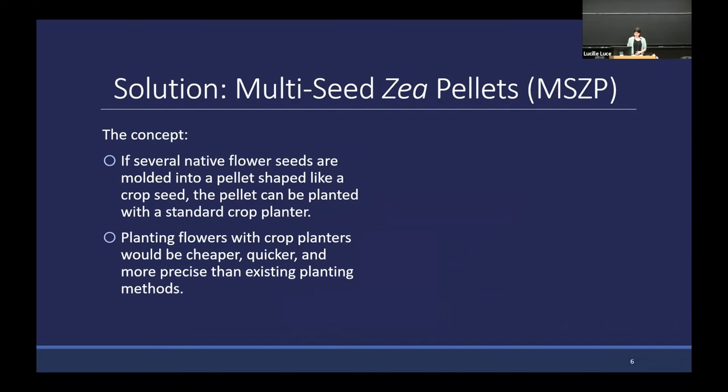The purpose of our project is to try to alleviate some of these challenges through the development of a new technology: Multi-Seed Via Pellet, MSVP. The concept is that if non-crop plants can be agglomerated or molded into pellets that are the size and shape of a crop seed, then those pellets can be planted with the crop planter the grower already owns and already has out in the field. This method would be faster, deeper, and more effective than existing methods of establishing flower strips.